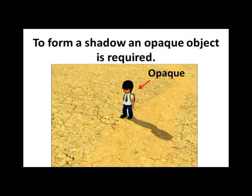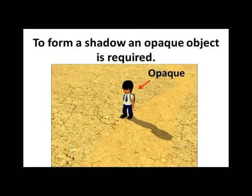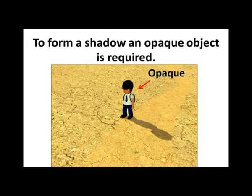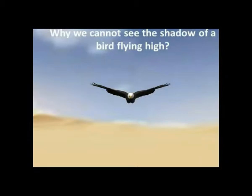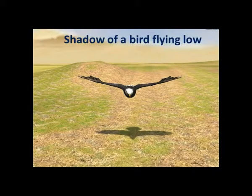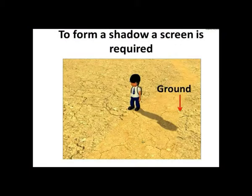Can transparent objects form shadows? We know a shadow is formed when an object blocks the path of light, but a transparent object allows all light to pass through it, so no shadow is formed. Now, why can we not see the shadow of a bird flying high in the sky? It is because a shadow always needs a screen or surface to form on. The land acts as a screen, but it is too far away. If the bird were flying low, we might see its shadow on the ground or on a nearby wall.